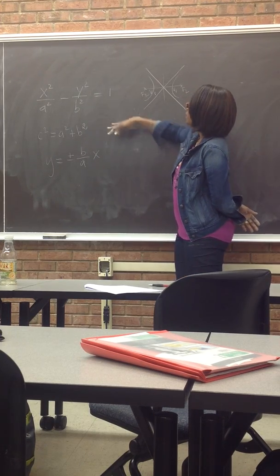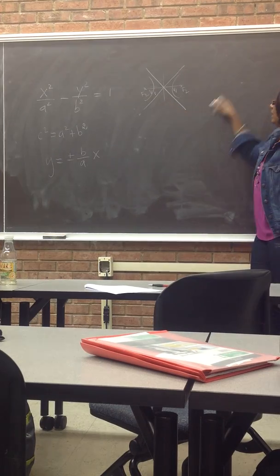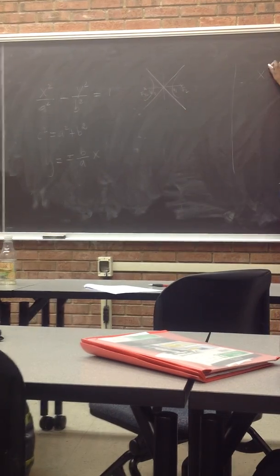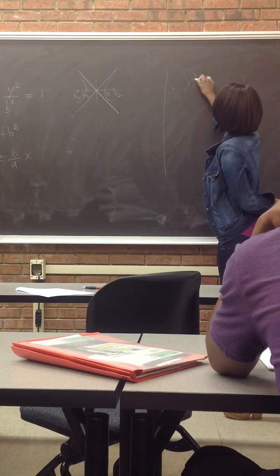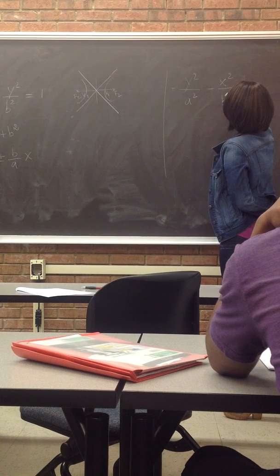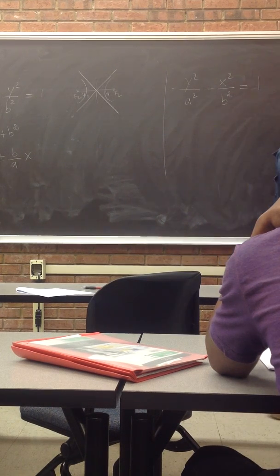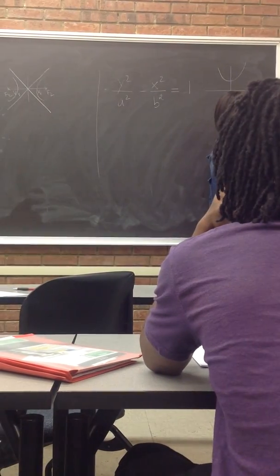So, this would be what I call the flat hyperbola, kind of. And then if I have, I'm sorry, y squared over a squared minus x squared over b squared equals 1. This is the long one now, kind of. This one goes this way and that way.